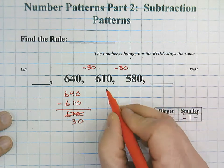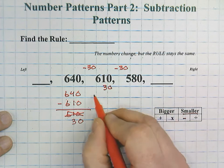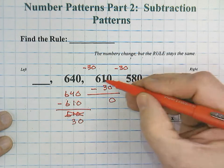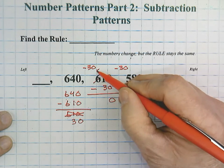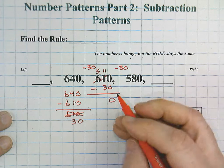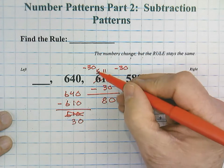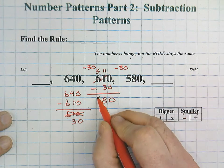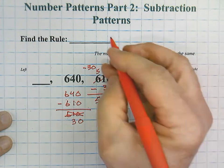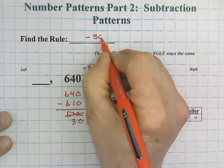Let's try it over here. 610 minus 30. Let's see if it equals 580. I'm just going to use this space right here. 0 take away 0 is 0. I'm going to have to regroup here, and that would become 11. 11 minus 3 would be 8. And then 5 take away nothing. And then you can see that we have our 580. So, we definitely have a minus 30 rule.